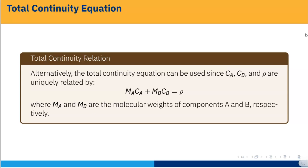Another equation we obtain is the total continuity equation. The total continuity equation can be used since CA, CB, and ρ are uniquely related by: MA·CA + MB·CB = ρ, where MA and MB are the molecular weights of components A and B respectively. This is the total continuity equation. Thank you.